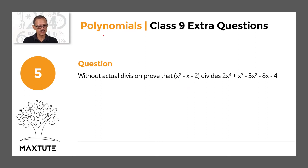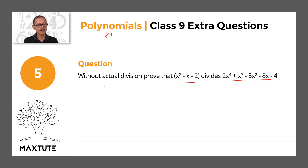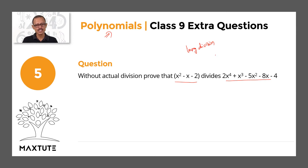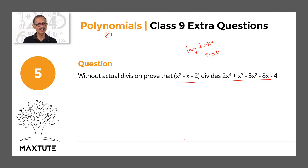CBSE class 9 math extra practice questions from the chapter polynomials. Without actual division, prove that this quadratic expression divides the given polynomial. If this term had not been there, one way to approach it is to do the long division of this polynomial by this quadratic expression. If the remainder equals 0, then x squared minus x minus 2 divides this polynomial. But we cannot do the actual division, so this question is a more interesting one. We'll be using factor theorem and remainder theorem to solve this.